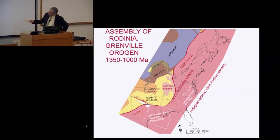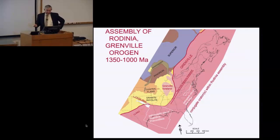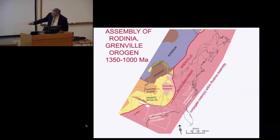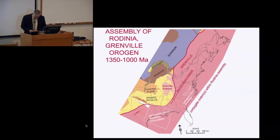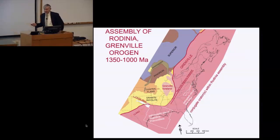This is the Grenville orogeny — 'orogeny' meaning mountain belt. These are the Grenville age mountain belts, ranging in age from about 1,350 down to 1,000 million years (Ma). I'll use 'Ma' throughout to mean million years. On this map: Florida is here, the Big Bend in Texas is over here, and Newfoundland — and of course Knoxville. I've outlined the area where rocks with Grenville ages of deformation and melting can be found. The western boundary is called the Grenville front.